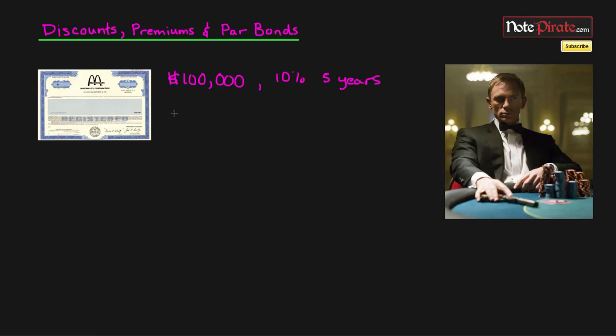So the timeline for this bond will look something like this. We're going to have 5 tick marks: 1, 2, 3, 4, 5. And the interest each year will be 10% of $100,000 or $10,000 of interest a year for 5 years.